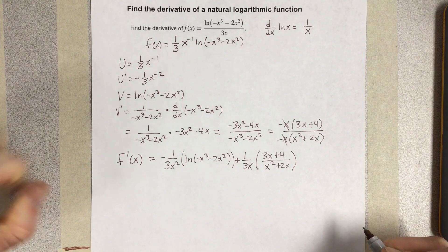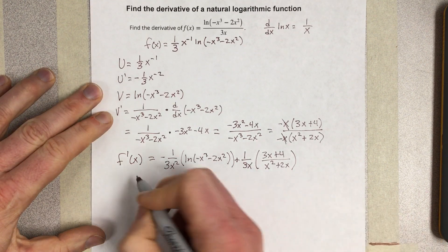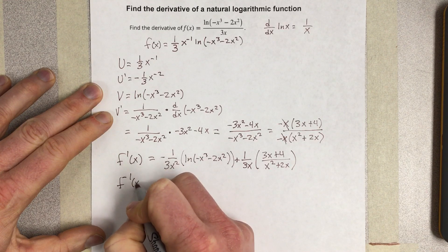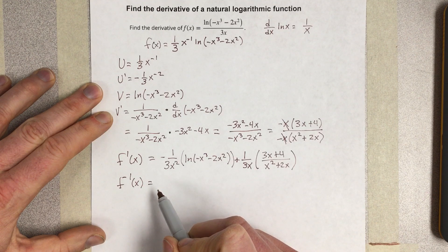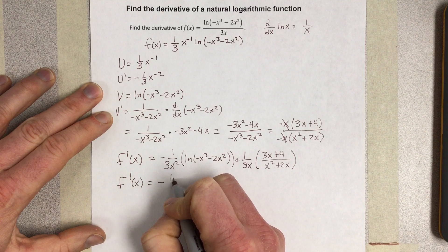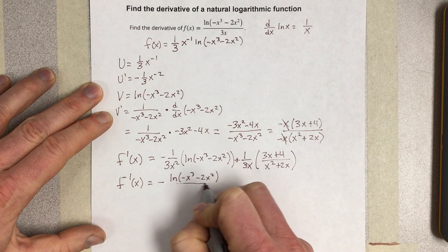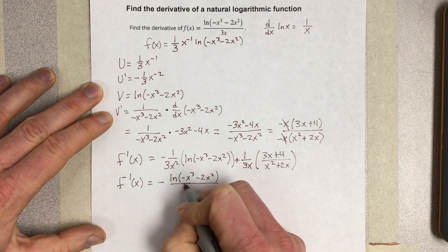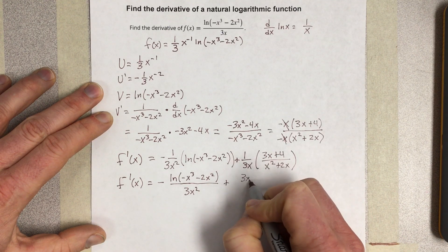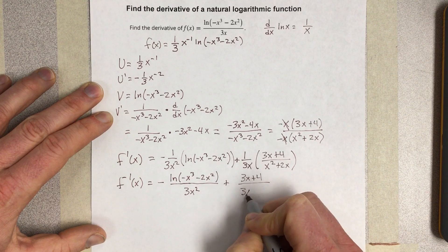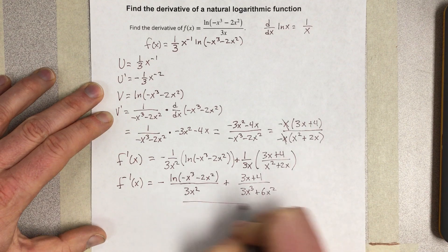I can multiply the 3x into the denominator of that fraction to simplify further. So f prime of x equals negative ln(-x³ - 2x²) over 3x squared, plus (3x + 4) over (3x³ + 6x²). And that would be the derivative.